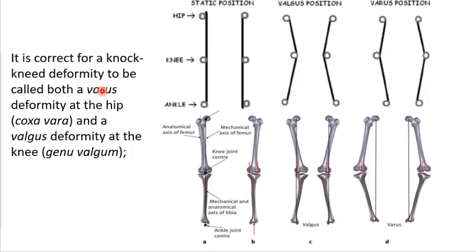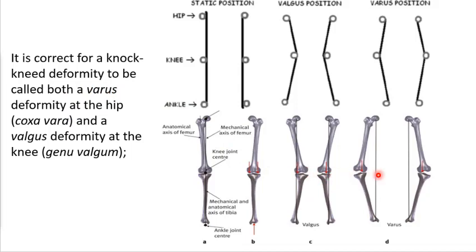Valgus is where the knees are stuck together, valgum; air between them is varus. At the hip the joint may be in varus, while the knee is in valgus, and the ankle in varus, so you have to be specific about what joint you're talking about. Most times when varus and valgus are used in practice, they're referring to the knee rather than the hip or ankle.